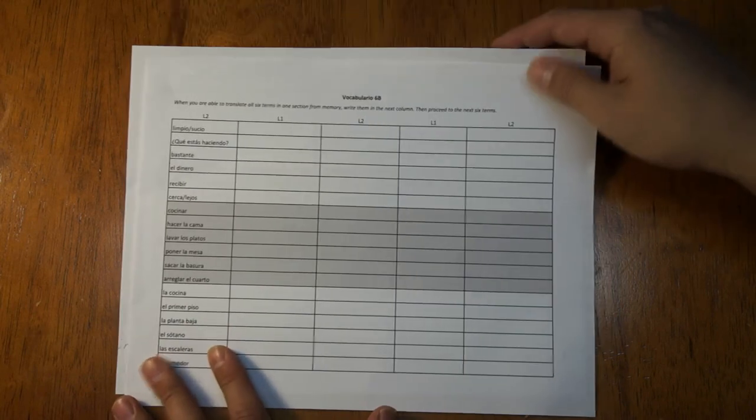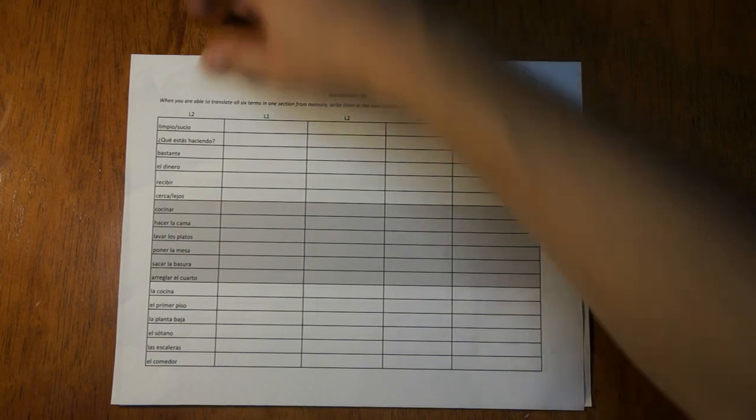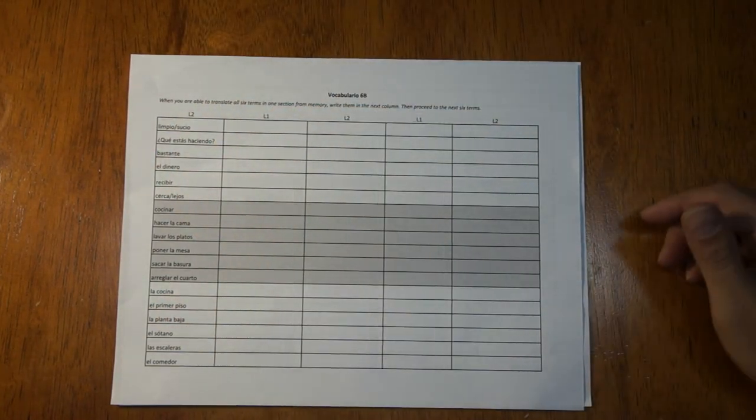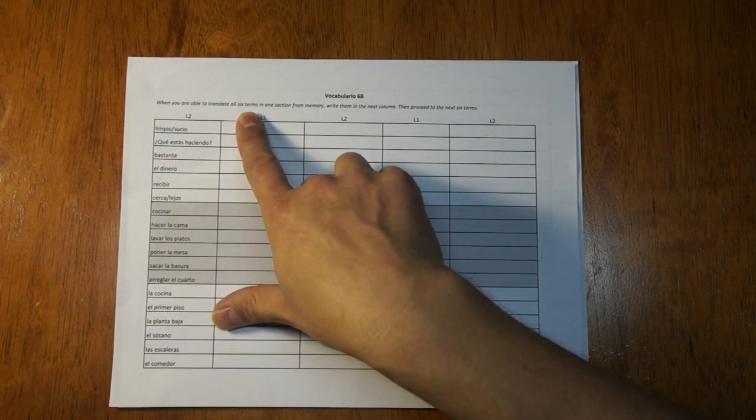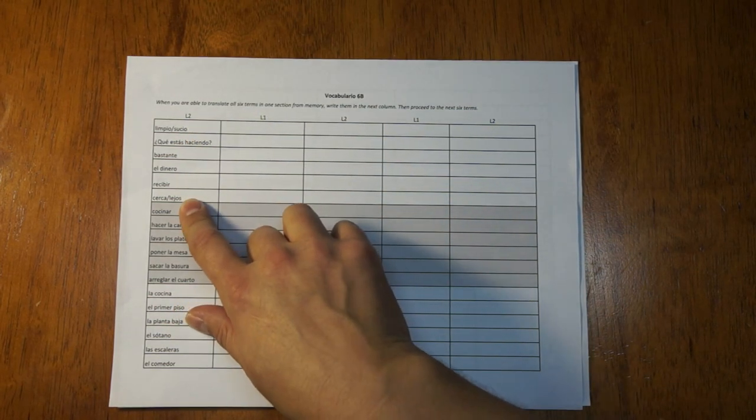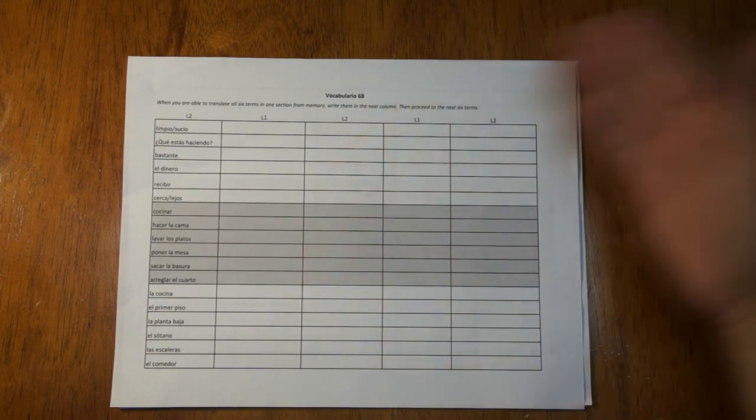Let me show you how I've used this in my Spanish class when I'm teaching Spanish. This is for the end of year one Spanish. And here are the directions. When you're able to translate all six terms in one section from memory, write them in the next column and then proceed to the next six terms.